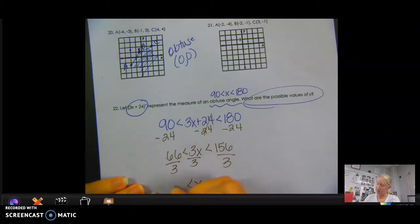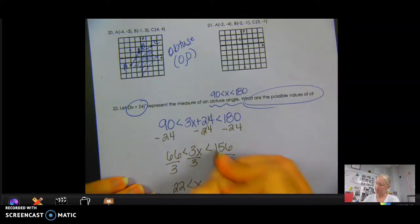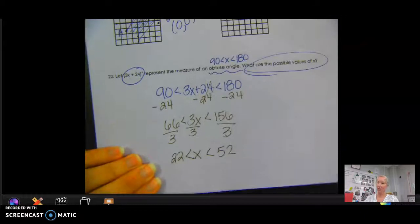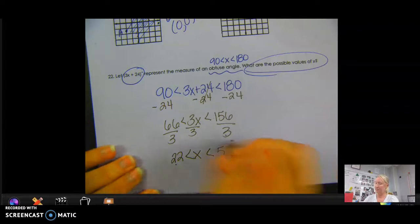So I get x in the middle. 66 divided by 3 is 22. 156 divided by 3. 3 goes into 15 5 times. It goes into 6 2 times. So that means that the value of x could be anywhere greater than 22, but less than 52.